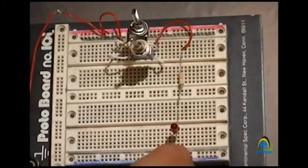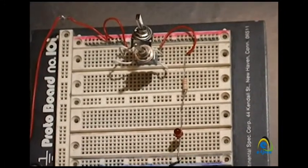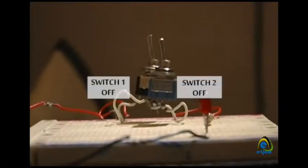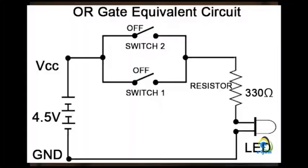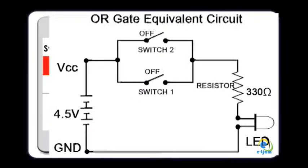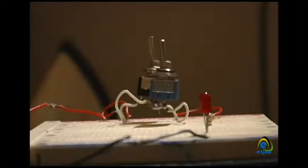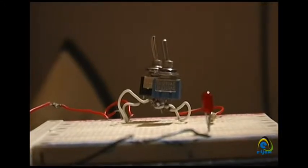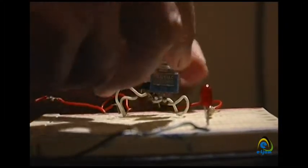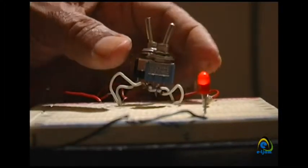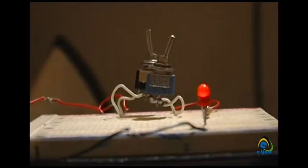Step one: turn off switches one and two and see if the LED or bulb is on — it will be off. Insert the values in the first row of the table. Step two: turn off switch one and turn on switch two.